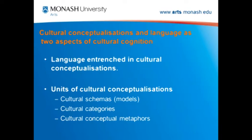There are two aspects to cultural cognition in this model: cultural conceptualizations and language, and they're very closely related. I believe language is very much entrenched in cultural conceptualizations, and units of cultural conceptualizations are closely associated with certain features of languages. These units include cultural schemas — which in cognitive anthropology are referred to as cultural models — as well as cultural cognitive categories and cultural conceptual metaphors.